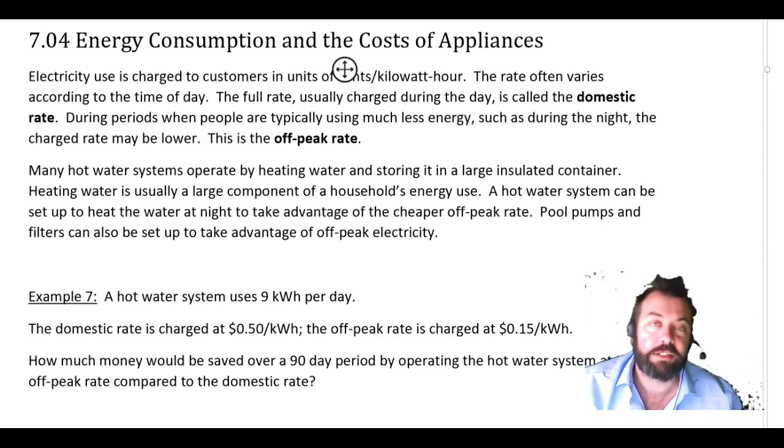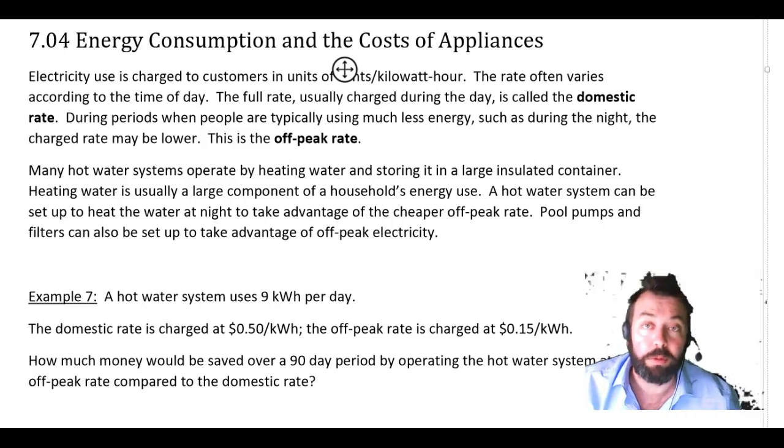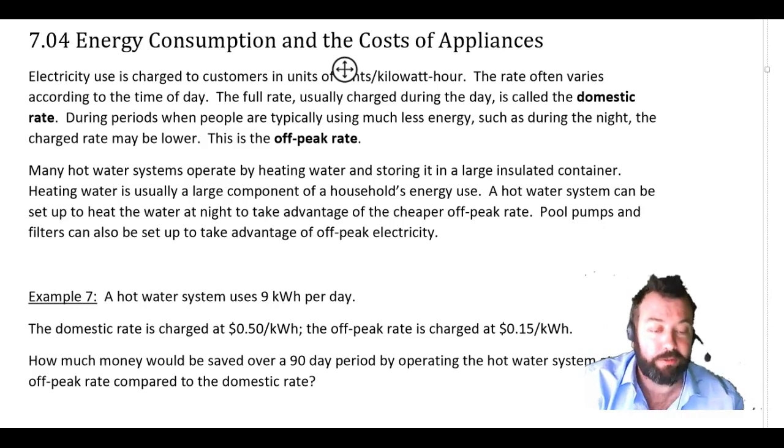The regular rate is just going to be called the domestic rate. So sometimes your power bill, or your energy bill as it should more properly be called, will be charged for the energy you use at two different rates: a domestic rate and an off-peak rate.